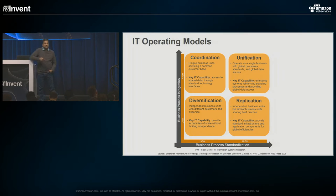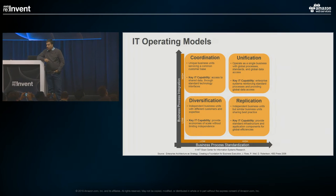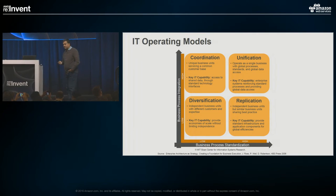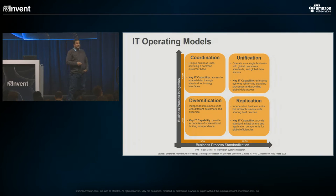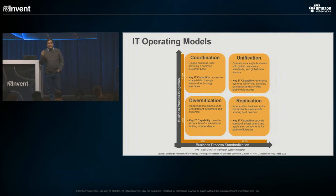We looked at many customer questions and want to give you a starting point based on how your company is organized. Ross, Bell, and Robinson at the MIT Sloan Center for Information Science Research did a study of many enterprises, looking at their IT operating model and classifying them into four basic types in a quadrant — based on the amount of standardization they do and the amount of integration they have across the business. We're going to base our patterns off of this classification.